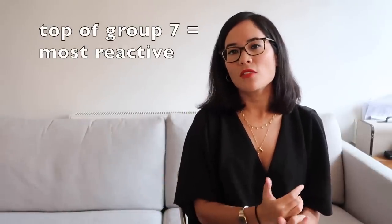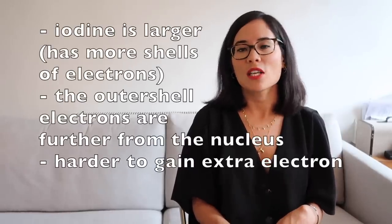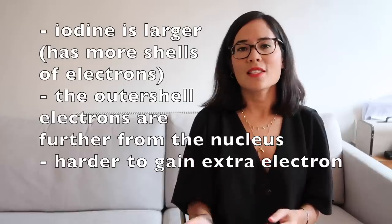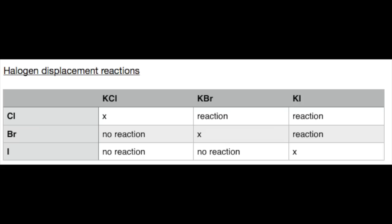More reactive halogens displace less reactive ones from their compounds — halogen displacement reactions. Reactivity decreases down the group: fluorine is most reactive, iodine least. Iodine is much less reactive than fluorine because it's larger, has more electron shells, so its outer electrons are further from the nucleus and more shielded, making it harder to gain an extra electron. In the displacement table, chlorine displaces both bromine and iodine; iodine cannot displace chlorine or bromine from their compounds.